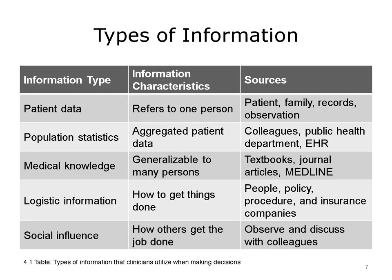Relevant patient information also may be electronically obtained through access to another health system provider, or a health information exchange. The second type of information is population statistics, which is data that has been aggregated from individual patients. One version of population statistics is a clinician's informal knowledge of recent local history, such as recent flu outbreaks or a resurgence of whooping cough, which may be relevant to the findings in a particular case. A more formal version might be a public health department publication about the frequency of diseases in a particular locale, or a population-based report obtained from a clinic's or hospital's EHR system.